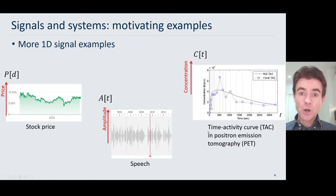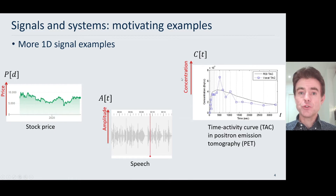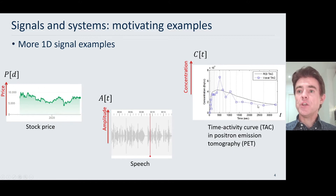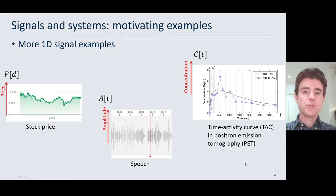Going back to the world of medical imaging, my particular research area is positron emission tomography, and so often we look at the concentration of a radio tracer, so that's a C, as a function of time in a particular region of interest. So yet again, more examples of 1D signals that are encountered in practice.